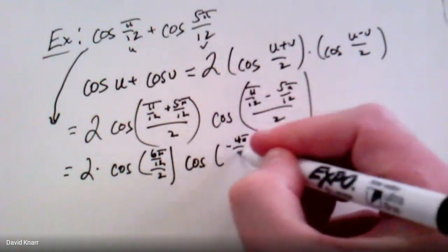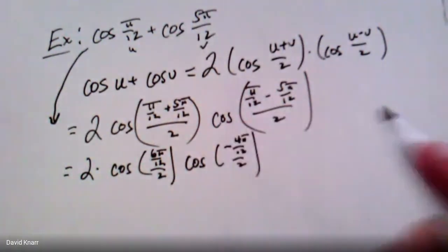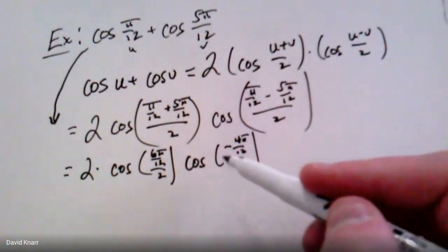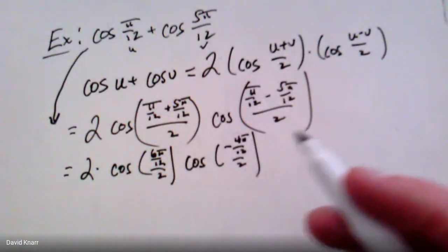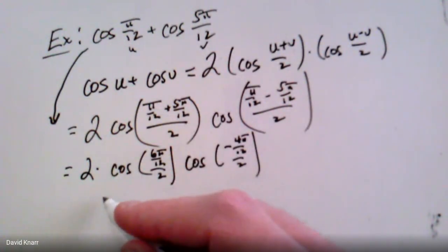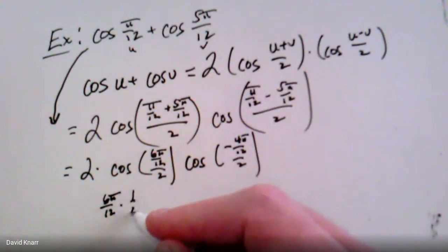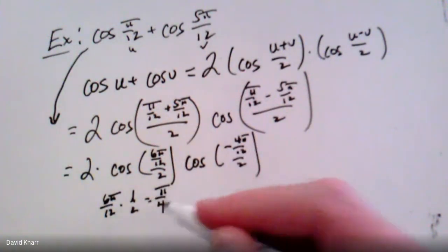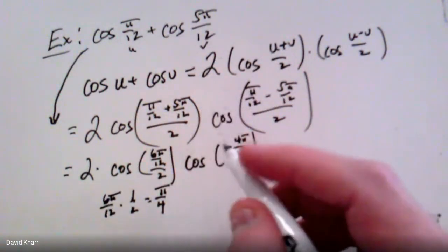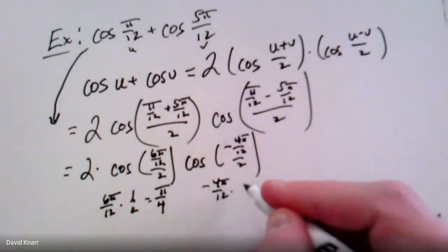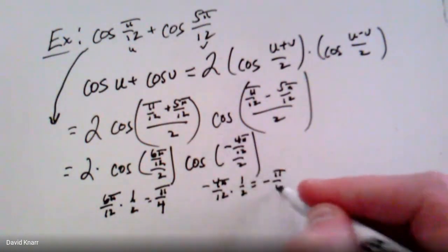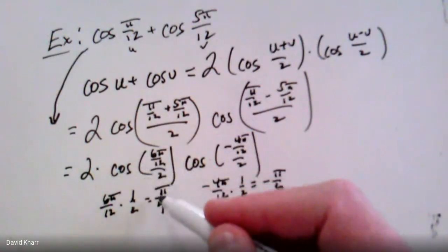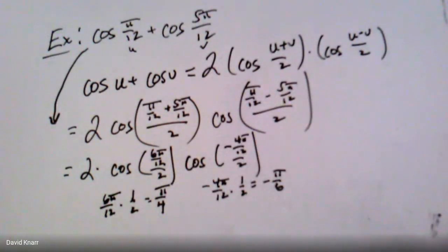Simplifying each argument: 6π/12 divided by 2 means 6π/12 times 1/2, which reduces to π/4. And −4π/12 times 1/2 gives −π/6. These are both angles on the unit circle, so the whole expression becomes 2·cos(π/4)·cos(−π/6).